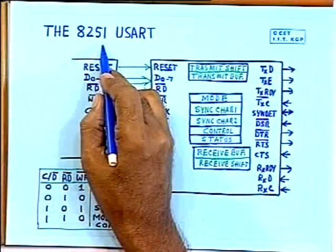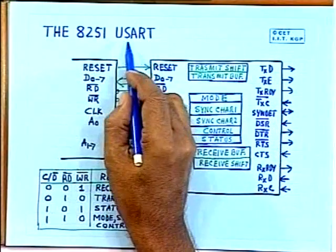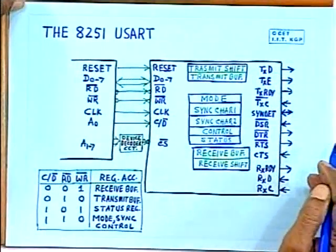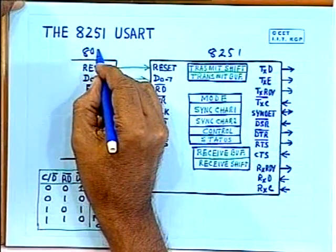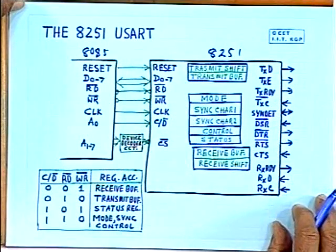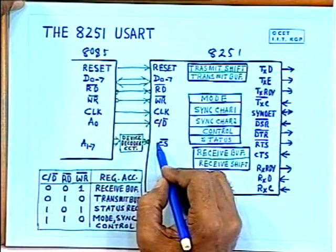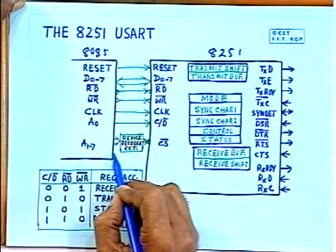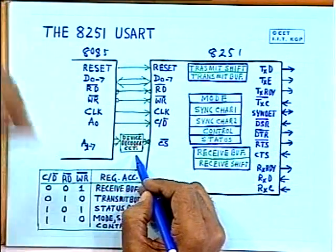Implementing this interface is not easy without support, so a programmable IO chip is used: the 8251 USART (Universal Synchronous Asynchronous Receive Transmit device). On the microprocessor side, it connects via data lines, read, write, clock, a C/D (command or data) line connected to A0, and A1–A17 used to map registers on the IO address bus. A chip select is generated based on the decoder circuit.